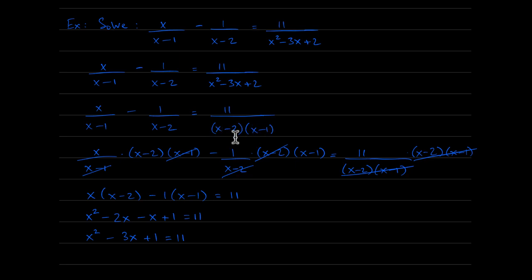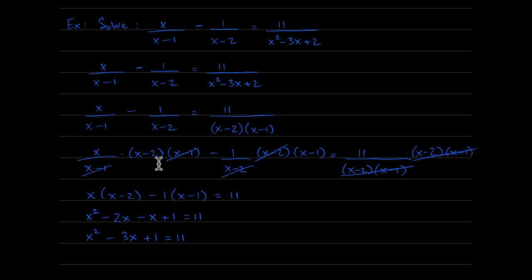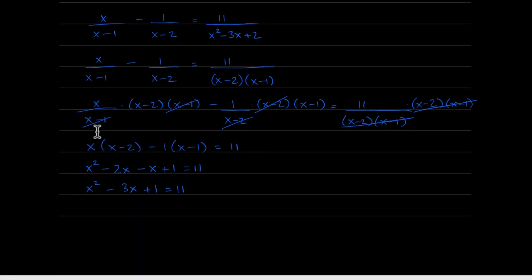Nothing changes — we multiply each term by the LCD, which is x minus 1 times x minus 2. Everything cancels in the first term; only x minus 2 cancels in the second; only x minus 1 cancels in the third. What's left: x times x minus 2 from the first term, minus 1 times x minus 1 from the second, and just 11 on the right.